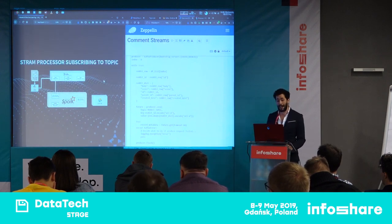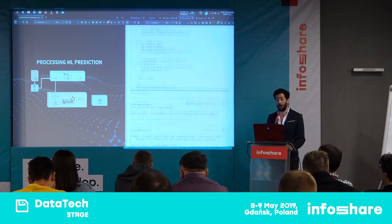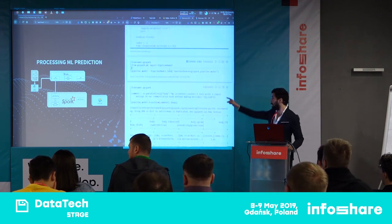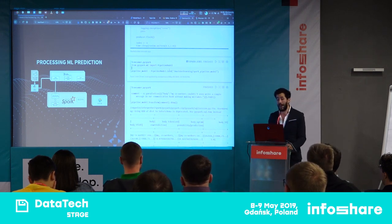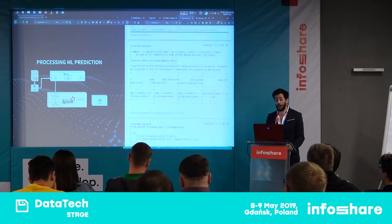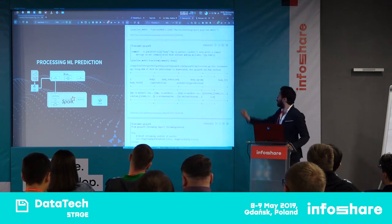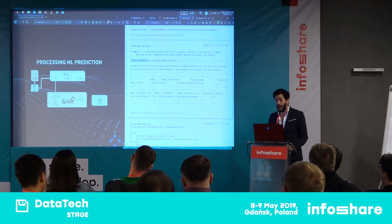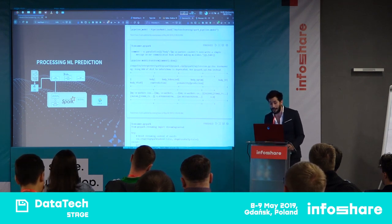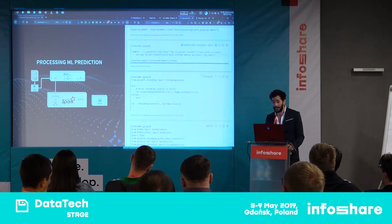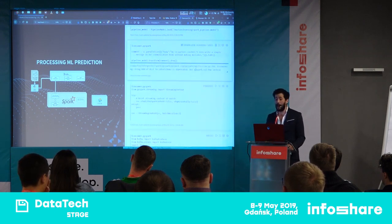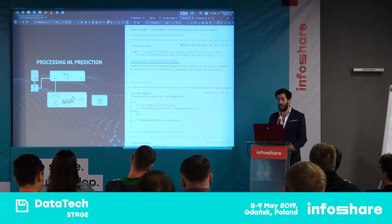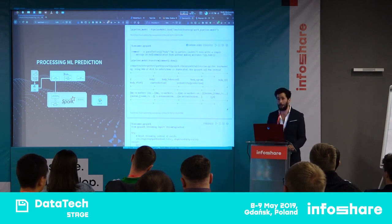The next step is to listen to this stream and perform some inference using the model we just trained. We load the model and use it — we run a string through this model. If we do pipeline_model.transform and give it the string 'my coworkers couldn't even write a simple message in our communication,' the prediction is that it should be removed. So it would be flagged. We're now going to start our streaming context — listening every two seconds.